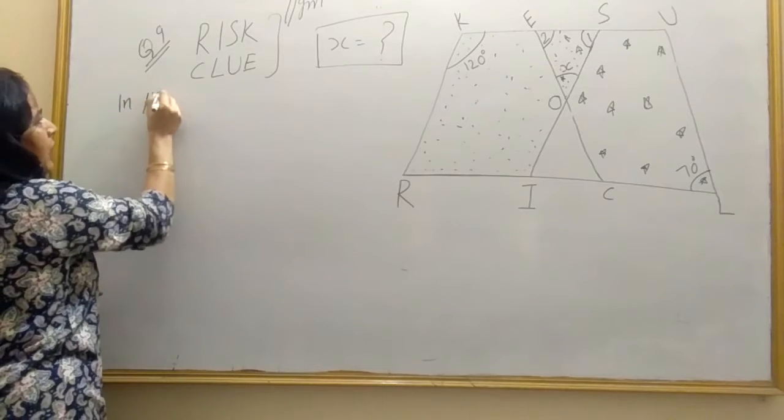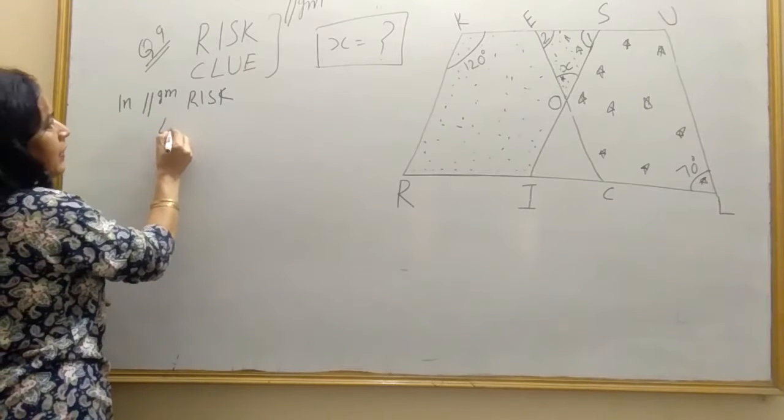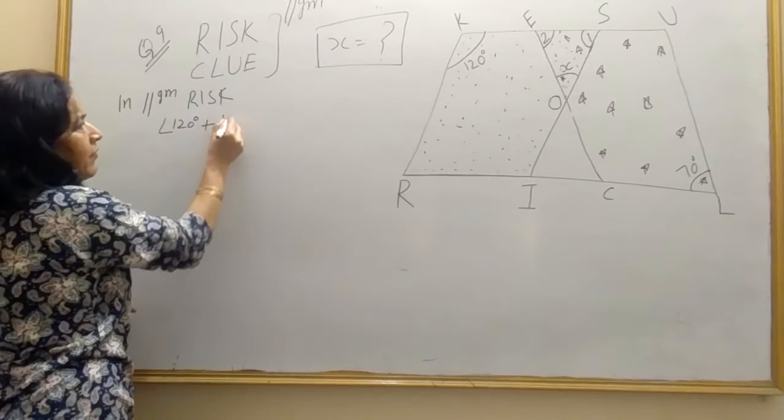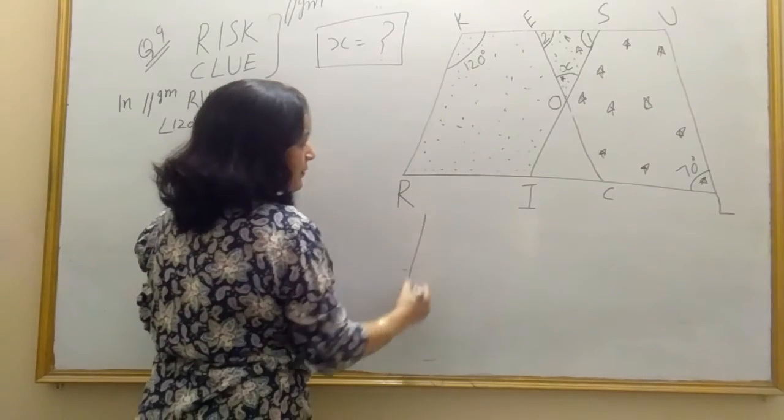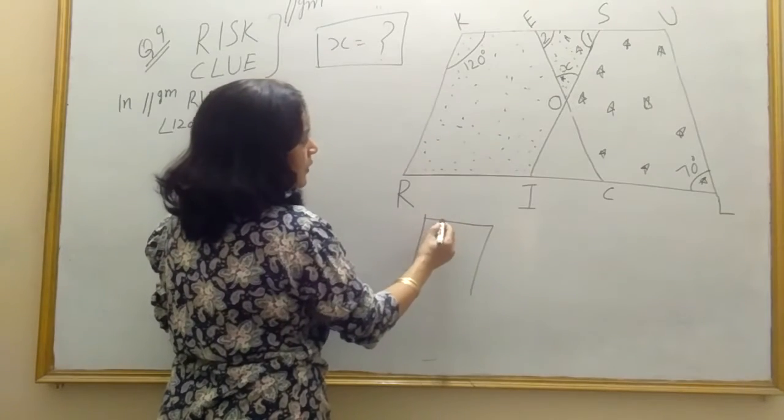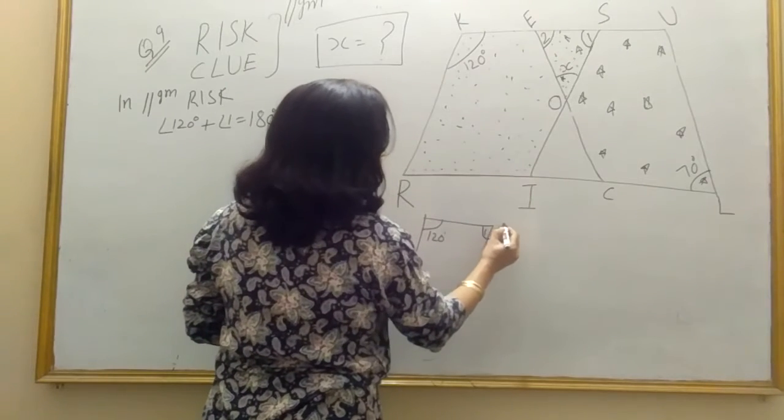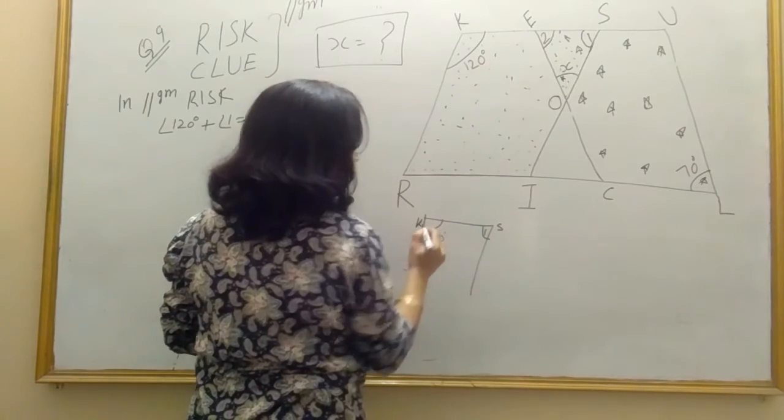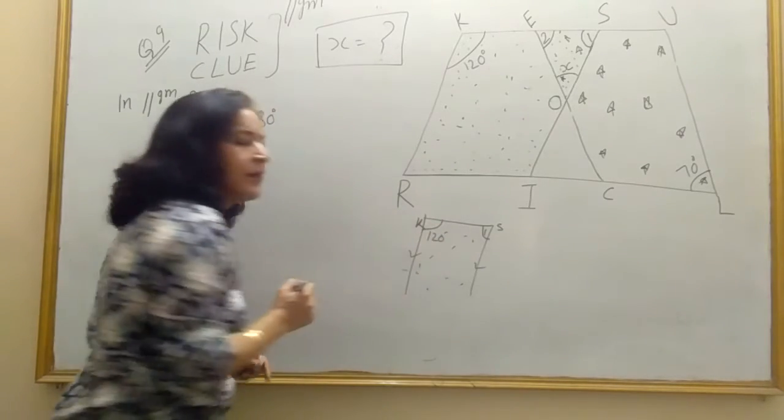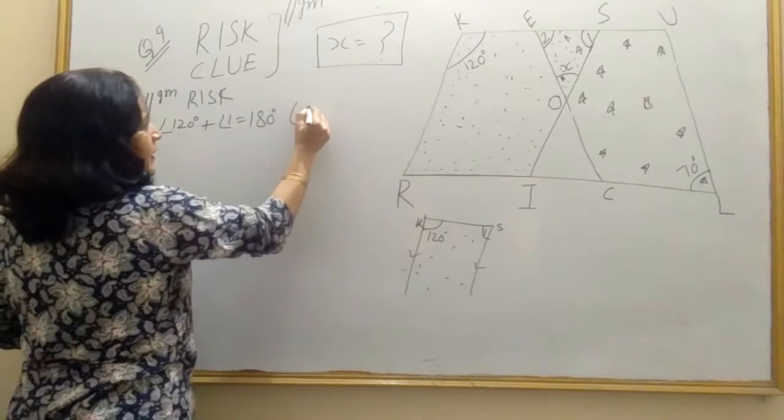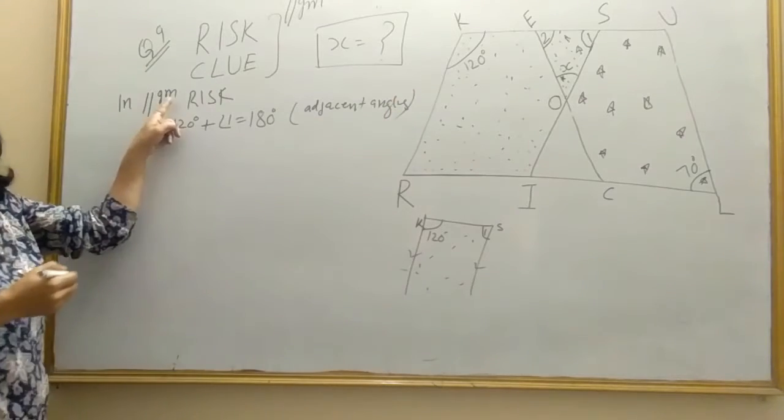So students, in parallelogram risk, angle K 120 degree plus angle 1 is equal to 180 degree adjacent angle of parallelogram like this. It's 120 degree, this one and it's angle 1, if it is point S and it is point K. So these are adjacent angles of parallelogram.